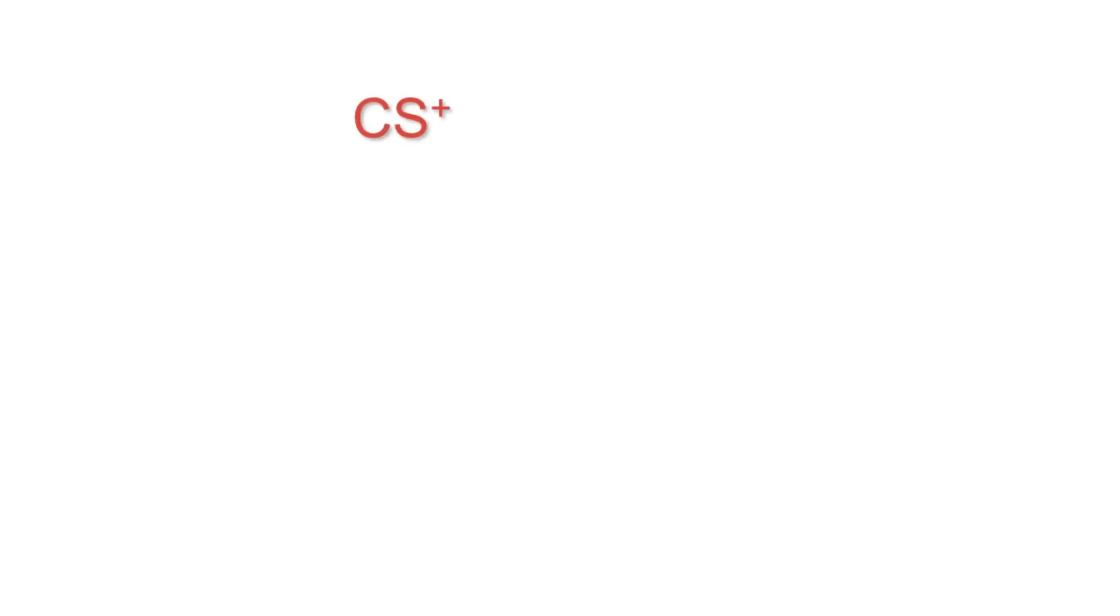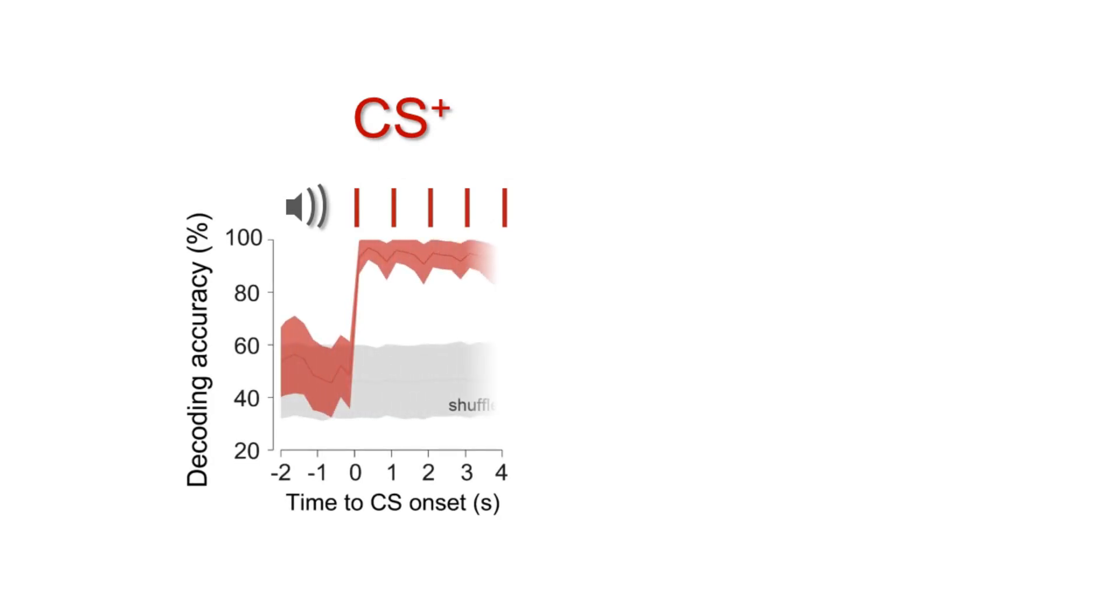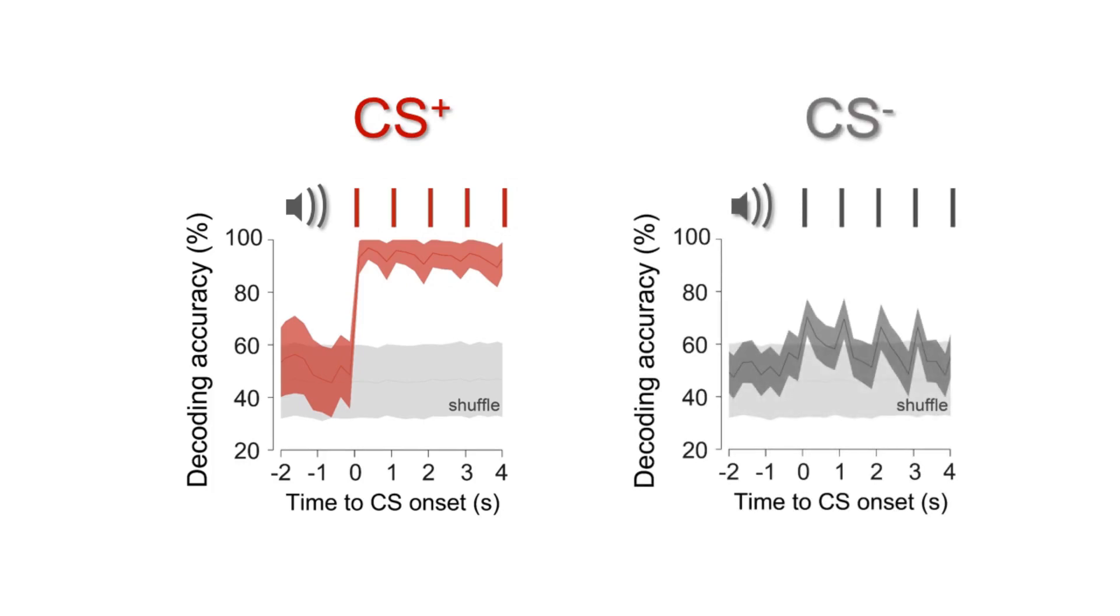We perform single unit recordings in the dorsal medial prefrontal cortex and analyze the data using artificial intelligence tools. We first observed that despite the discrete structure of the sound, neural populations in the PFC maintain sustained information about the presence of CS+, even during the absence of auditory inputs, something that is not happening during CS- presentations.